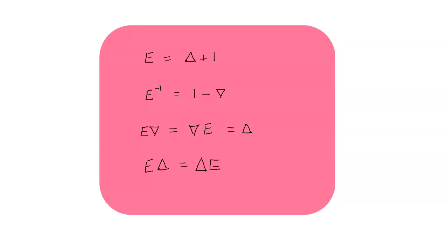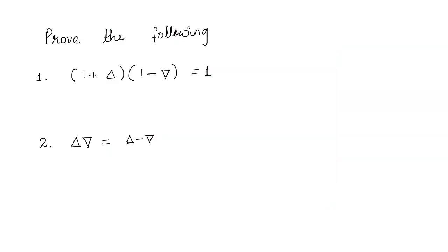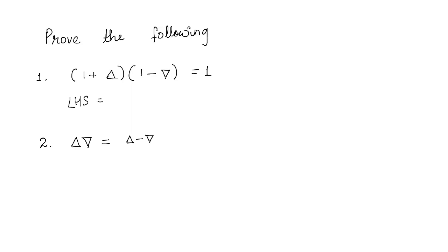Now let us see how we can use these properties to prove some relations. We need to prove that (1 + delta)(1 - nabla) = 1. From our first property, 1 + delta equals E. From the second property, 1 - nabla equals E inverse. So the left hand side equals E multiplied by E inverse, which gives 1. You just have to use the properties — it takes only one or two steps to prove any such relation.